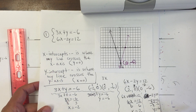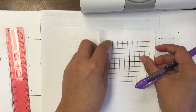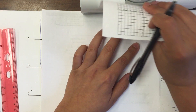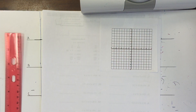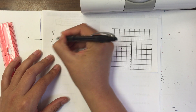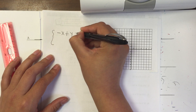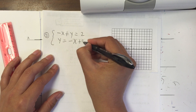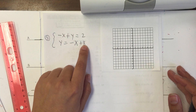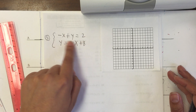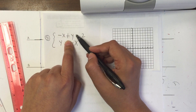Let's do another example. If you need to pause it, make sure that you do so. The next system is negative x plus y equals 2, and y equals negative x plus 8. Since you already learned how to use the y-intercept and the slope yesterday when y is by itself, we're going to leave that one and just do the intercepts for the first equation.